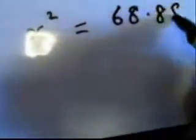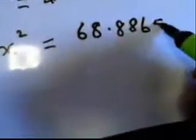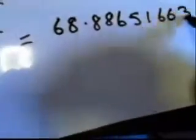and that's what x squared is, so I've got x squared equals that, 68.888655. But that's x squared, so that's 68.88651663.